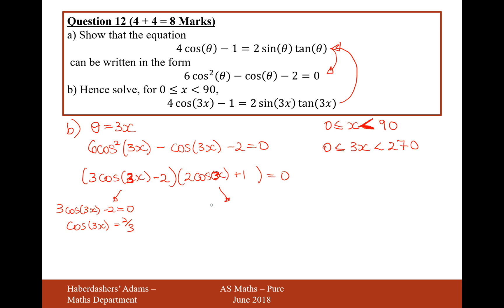And in this bracket here, it's going to be 2 cos 3x plus 1 equals 0. So then cos 3x equals minus 1 half.